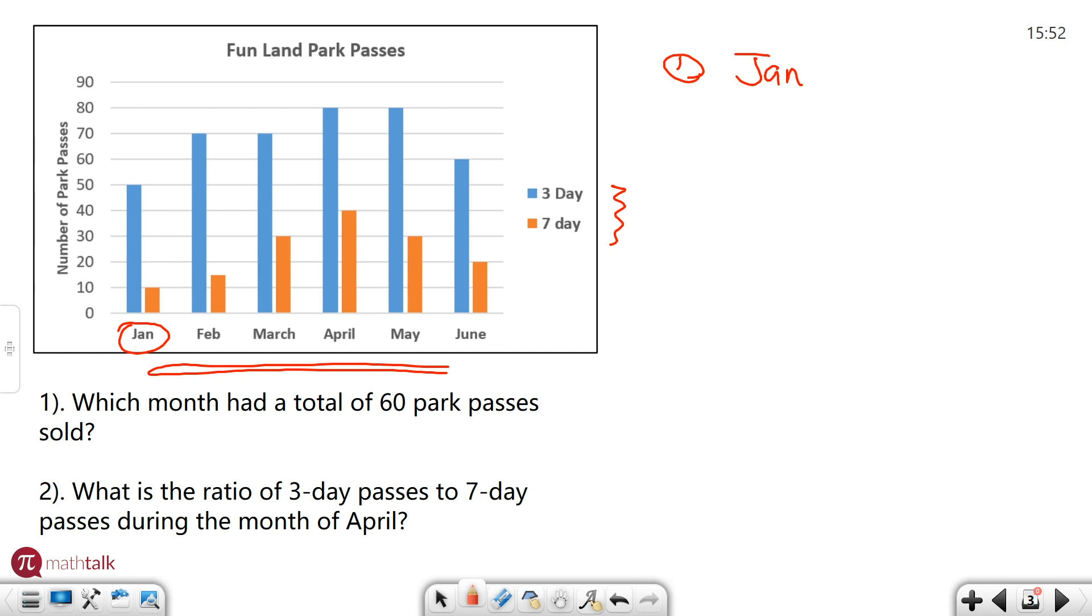Question number two says what is the ratio of three day passes to seven day passes during the month of April? We're looking at one specific month here, which means we can not worry about the rest of the data. The ratio of three day to seven day. Well, ratios are written in several different ways. One of them is a fraction. So I'm going to write my fraction, I'm going to write 3D for three day and 7D for seven day, just as a generic representation here.